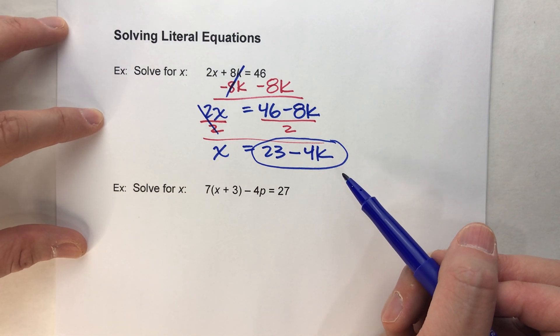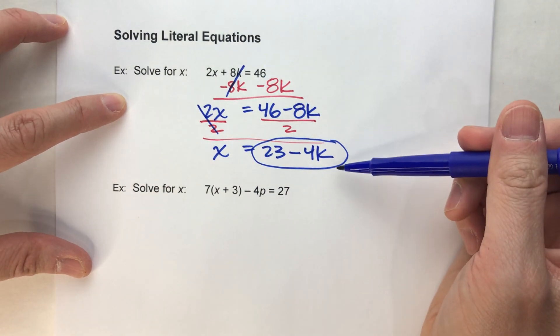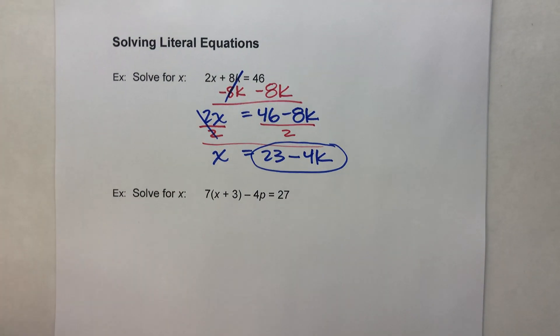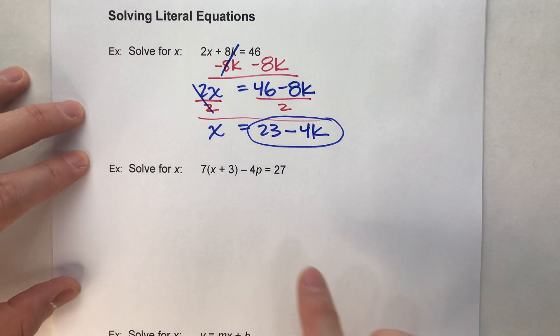So like what I said before, we're not going to get a single value for x, we're going to get a variable expression because we have another variable that we don't know the value of. Let's see a slightly harder one here, for example 2 here.